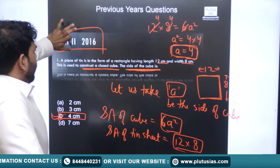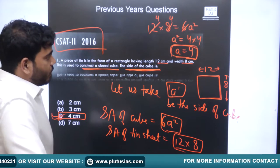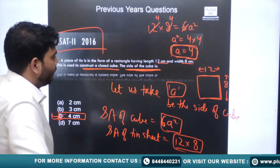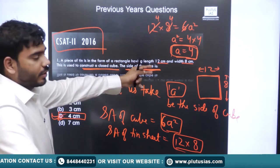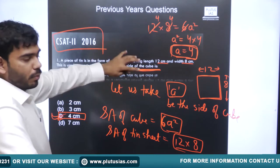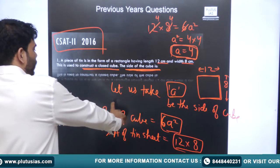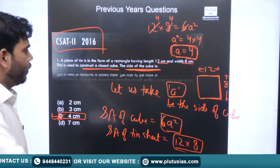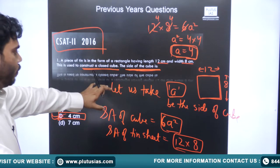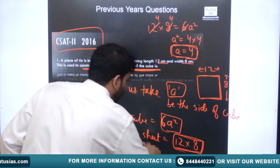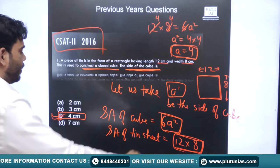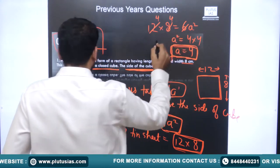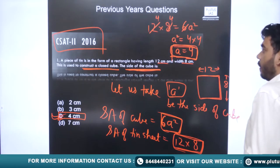To summarize: we had a rectangular tin sheet of dimensions 12×8. We equated its surface area with the total surface area of the cube, which is 6a². Setting 12×8 equal to 6a² and solving gave us a = 4. So the side length of the cube is 4 cm.